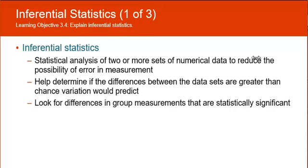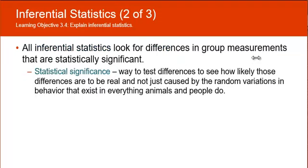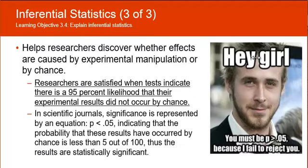We're not going to go into how we find these measurements, but you just need to know what these measurements are. Researchers are satisfied in experiments when there's a 95% likelihood that their experimental results did not occur by chance. So in scientific journals or research papers, the significance is represented by the equation p is less than 0.05, meaning that the probability that the results of the experiment have occurred by chance is less than five out of one hundred, five percent. Thus the results are statistically significant. And here you go, a picture of Ryan Gosling saying, "Hey girl, you must be p greater than 0.05 because I failed to reject you."